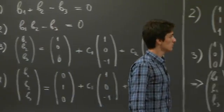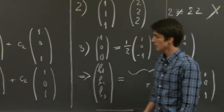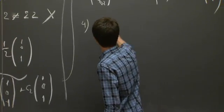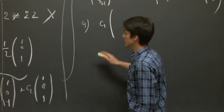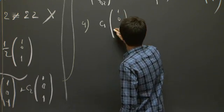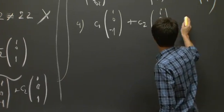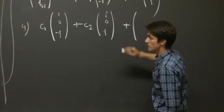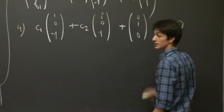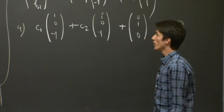OK, well, is 0 inside this subset? Meaning, can we find coefficients c1 and c2 plus (0, 1, 0) to equal the 0 vector? And the answer is no.